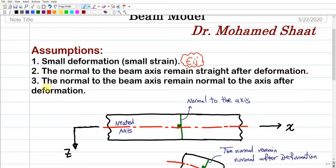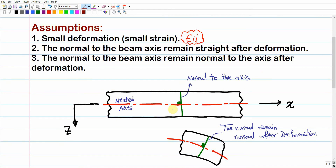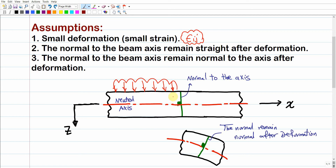One of the essential assumptions of the Euler-Bernoulli beam theory is that the normal to the beam axis remains normal after deformation. To understand this, consider a beam structure. Unlike bars or rods, beam structures support transverse loads — forces acting in the direction normal to the beam axis — causing the beam to bend. We are now deriving the equations behind what we used in mechanics of materials.